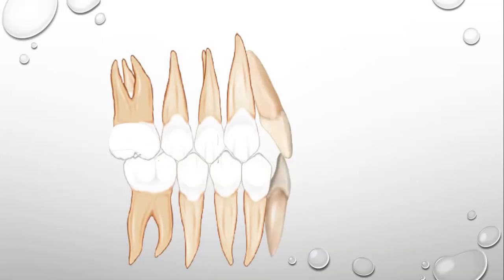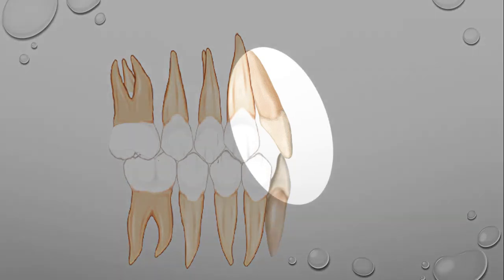By now it must be clear that all the teeth have different torque values. But standard edgewise brackets are same for all the teeth. So if a patient comes to you with an ideal occlusion and you fix standard edgewise bracket on his teeth, what is going to happen?